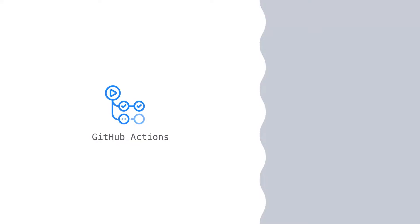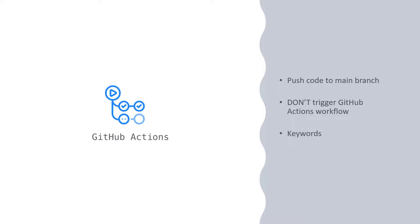Sometimes when using GitHub Actions, you might want to push your code to a branch and not trigger the Actions workflow. Let's look at how we can use keywords to make that happen.